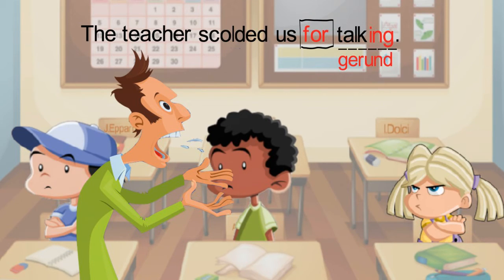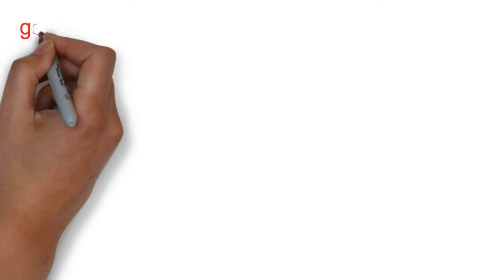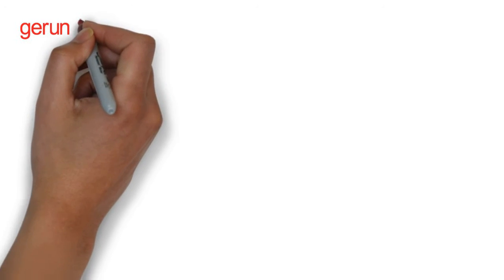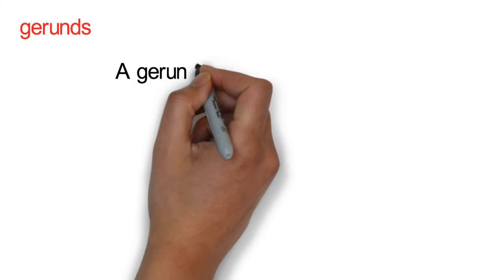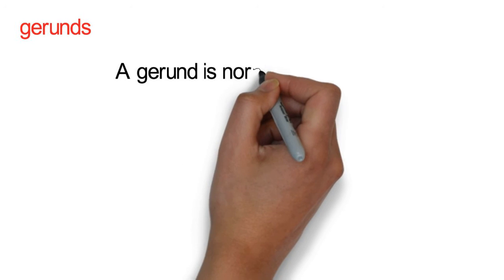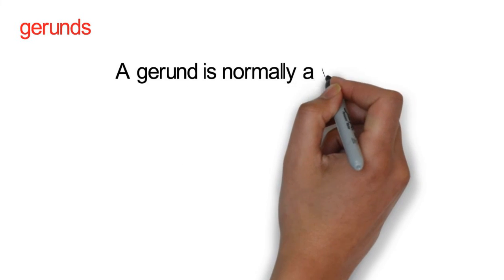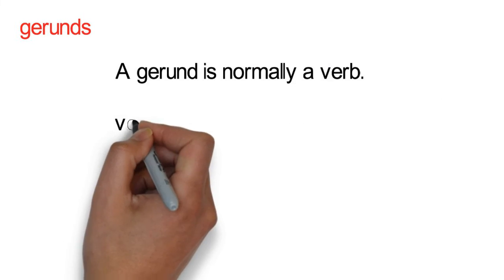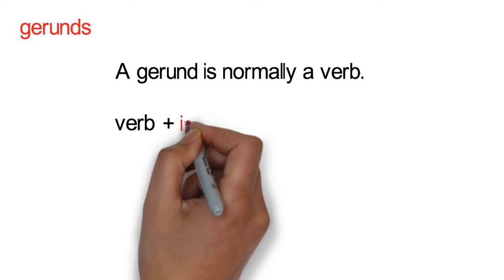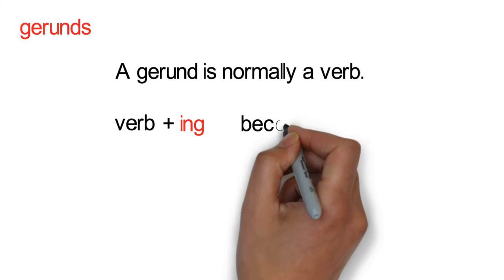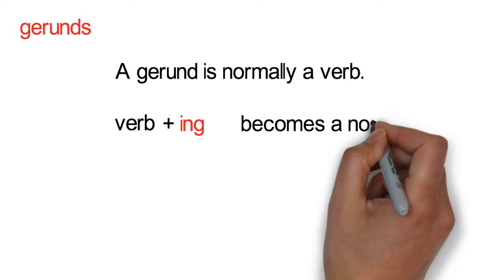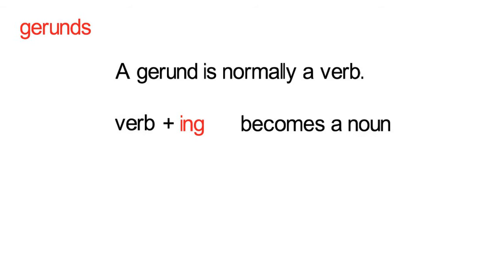Let's review the gerund. A gerund is a word that is normally a verb, but when -ing is added to it, it becomes a noun or an object in a sentence.